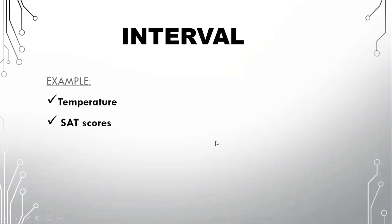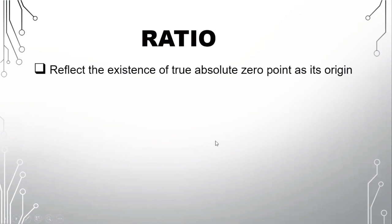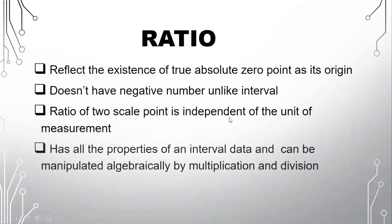Next and last level of measurement is the ratio scale. It reflects the existence of true absolute zero point as its origin. So this is the opposite of interval scale. So if in interval there's no true absolute zero point, in ratio we have true absolute zero point. It doesn't have negative numbers unlike interval. Ratio of two scale point is independent of the unit of measurement. And it has all the properties of an interval data and can be manipulated algebraically by multiplication and division. So let's have here examples of ratio scale.